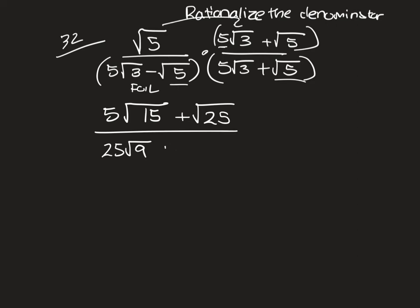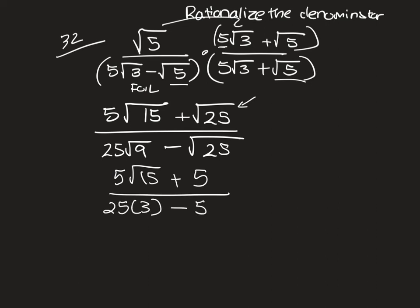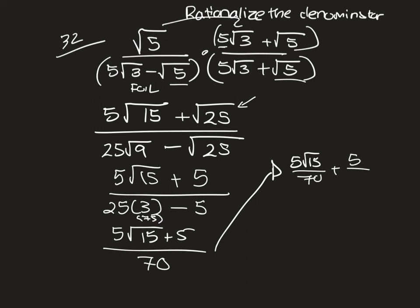Let's see if we can simplify it. So 5 sqrt(15), can't do anything to this one. I can actually square root this one, so that's 5. This one becomes 25 times 3, this becomes 5. So now we have 5 sqrt(15) plus 5 over 75, really, right? This is 75 minus 5, so over 70.